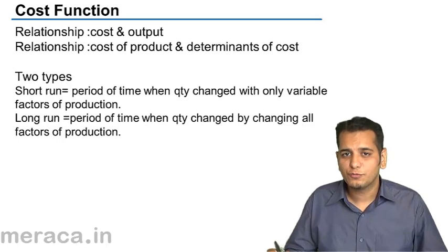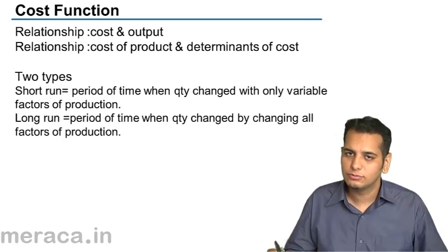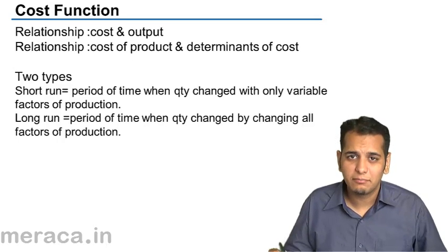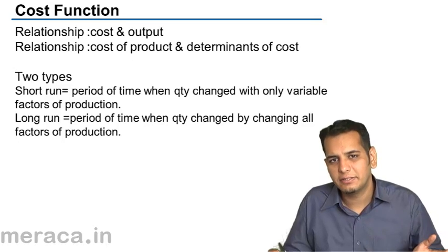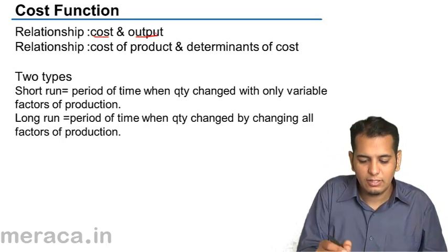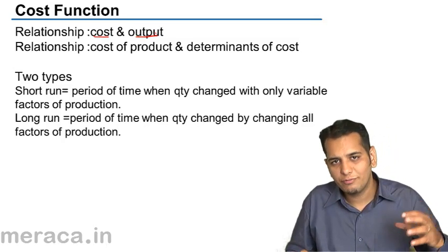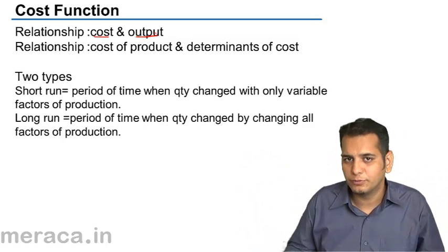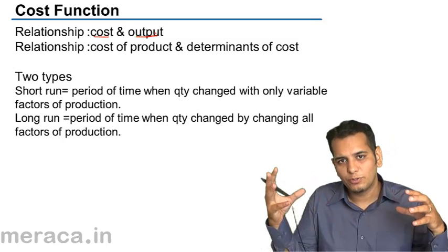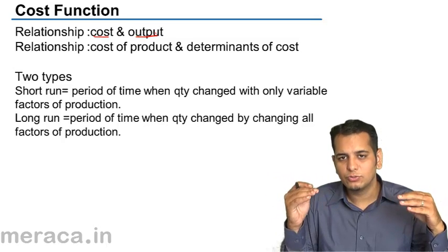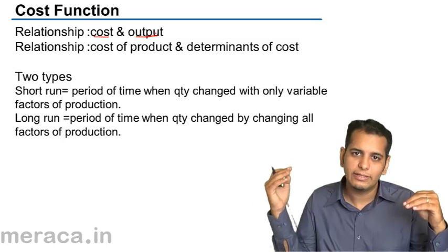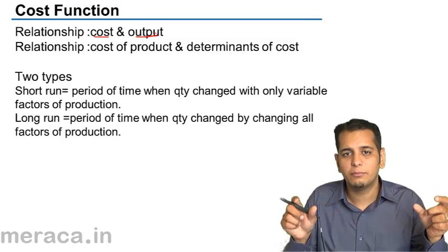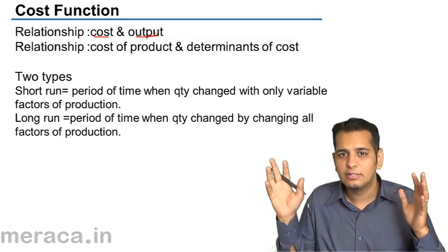Now let's see what is cost function and what are long-run cost and short-run cost. Cost function is the relation between cost and output. It tells you what will be the cost of producing one unit at a given level of output, because as output increases, cost tends to reduce, and after a certain level it tends to increase. Cost function gives you the relation of per unit cost at a particular level of output.